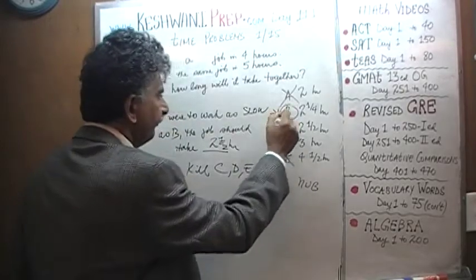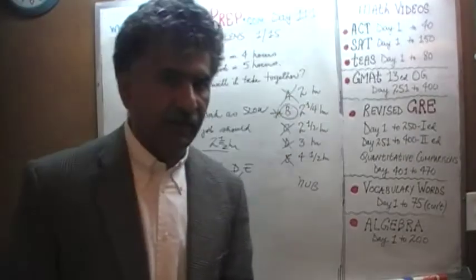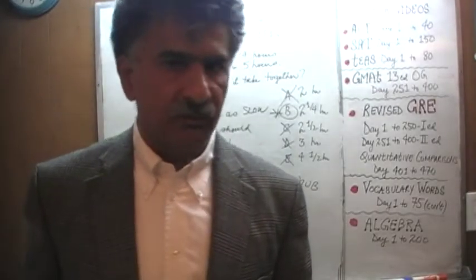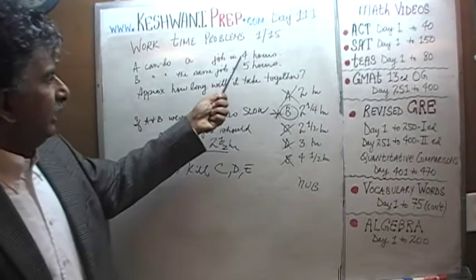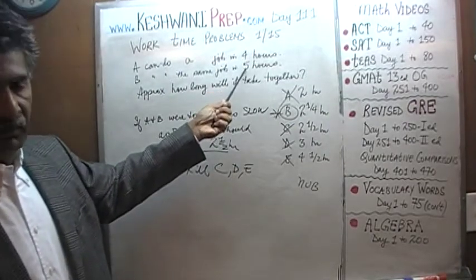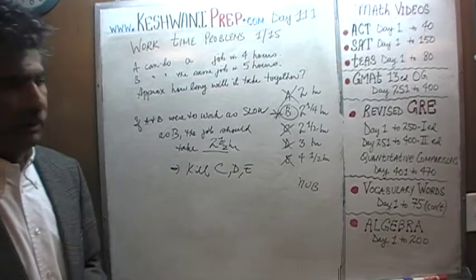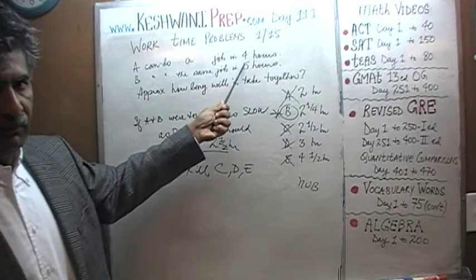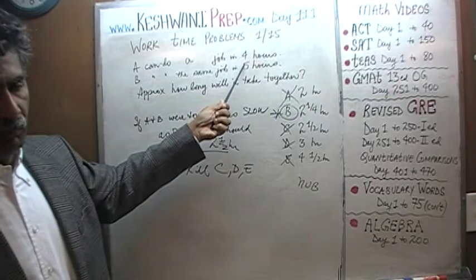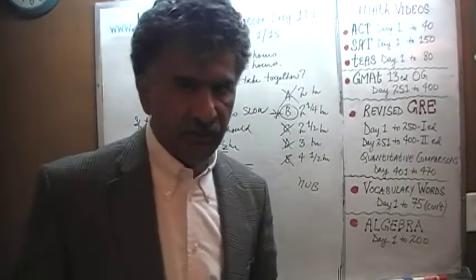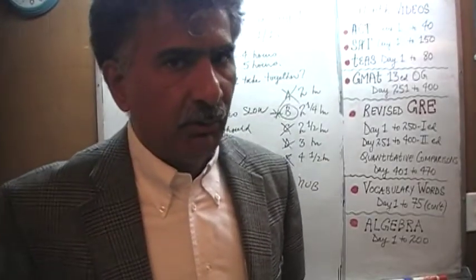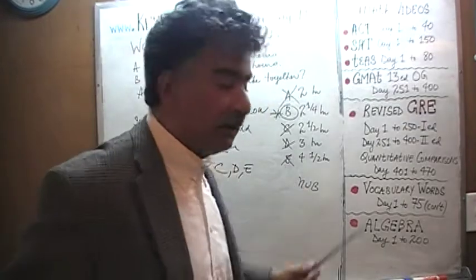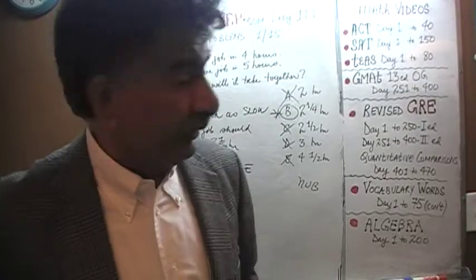There we go — the answer is B. That's it, we are done. In the real exam, this thinking should take no more than a few seconds. Just look at it: the correct answer has to be between two and two and a half. Knock out anything that is equal to two or less than two. Knock out anything that is equal to two and a half or more. In most cases you will narrow down your answer choices to maybe two or three. Here we got lucky — there is only one answer choice left, which means we are done. The answer is B.